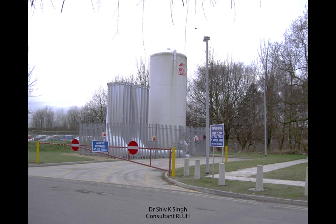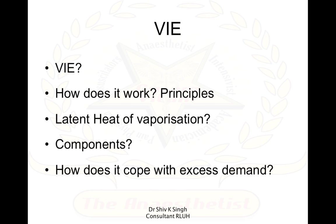Looking at the source: the source of gases to the pipeline comes from the vacuum insulated evaporator. What exactly is a VIE or vacuum insulated evaporator? How does it work, and how is the latent heat of vaporization important here? What are the components, and how does it cope with excess demand — for example, in winter time or when you have 20 theatres running simultaneously with patients on ventilators?